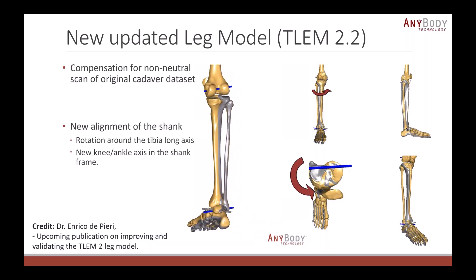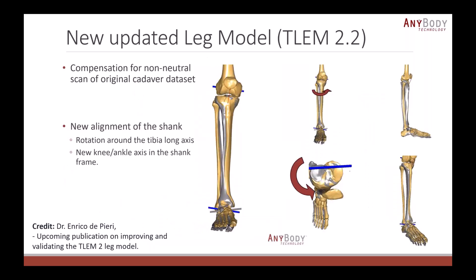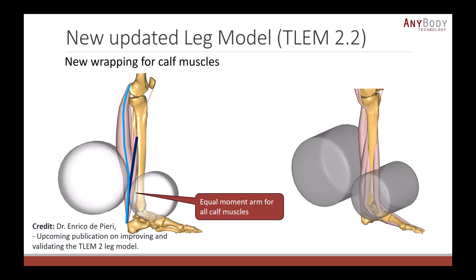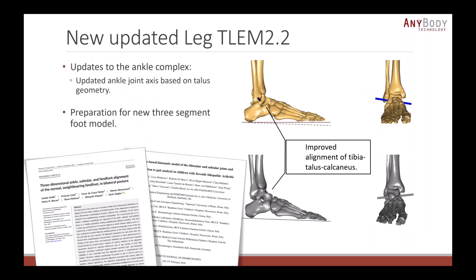This small video shows the before and after where the gray model is how it looked before and the yellow one is the current one. One of the important things is that the patella tendon has a much better alignment. Enrico has also provided new wrapping surfaces for the calf muscles, ensuring that the calf muscles, both soleus and gastrocnemius, have more or less the same moment arm throughout the range of motion. Internally, we have worked on the ankle joint. The whole ankle joint in the TLM model has been redesigned. All the different bones have been realigned in a neutral position. One of my colleagues worked on defining new joint axis for the ankle based on these papers. All of this is a preparation for some future foot modeling that we are working on.